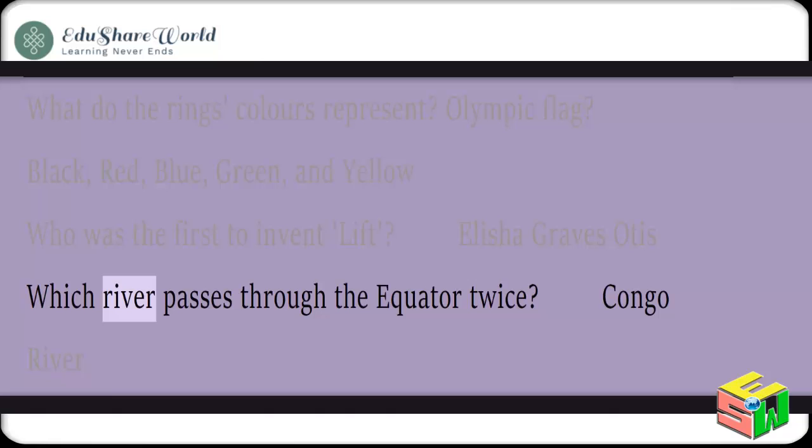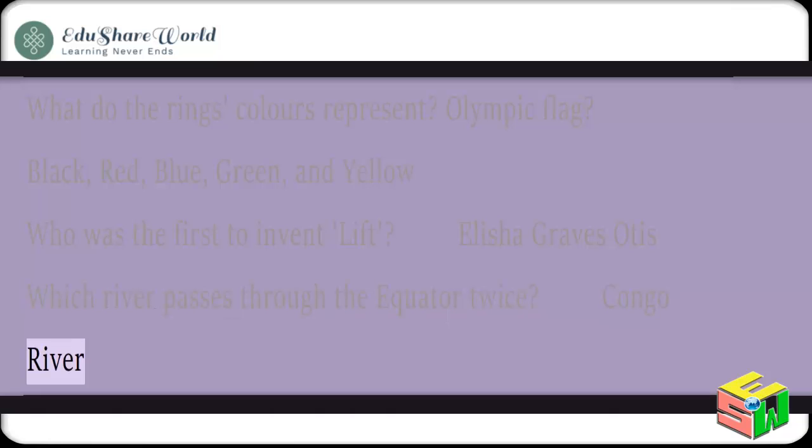Which river passes through the equator twice? The Congo River.